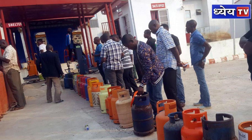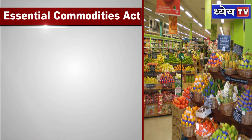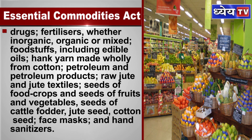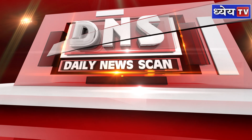At present, the Schedule contains nine commodities: drugs; fertilizers, whether inorganic, organic or mixed; foodstuffs including edible oils; hank yarn made wholly from cotton; petroleum and petroleum products; raw jute and jute textiles; seeds of food crops and seeds of fruits and vegetables; seeds of cattle fodder, jute seed, cotton seed; and face masks and hand sanitizers.